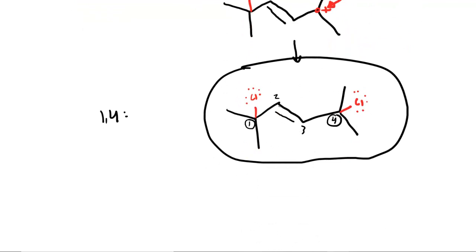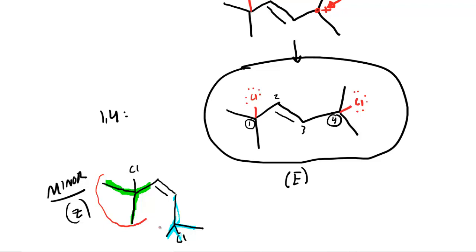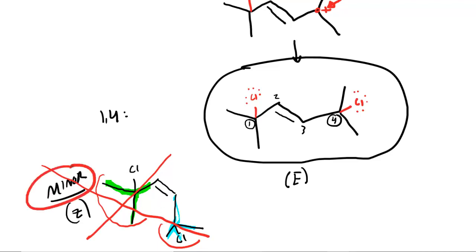Those concerned about it will notice that the double bond drawn is the E isomer. It is theoretically possible that the Z isomer would form. The Z isomer would still have the double bond but the bulky group would be placed on the same side as the other bulky group, with the chlorines arranged accordingly. However, this is a relatively minor product, because these bulky groups would sterically interfere with one another — the electron clouds would repel, making this product very unlikely to form in any great quantity. So don't draw the Z isomer as part of your 1,4 addition product, as it is only a minor product.